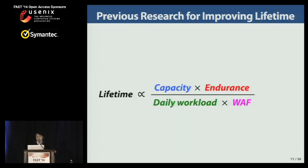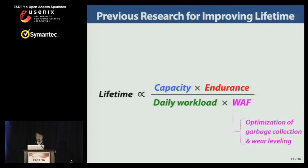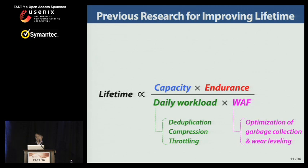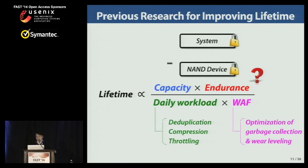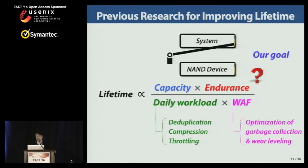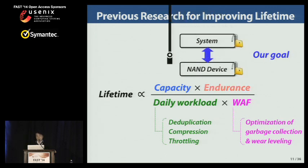Until now, many lifetime-enhancing techniques have been mainly focused on reducing the write amplification factor. For example, garbage collection and wear leveling techniques have been improved to increase the efficiency of FTL algorithms. Moreover, to reduce daily workload, various system-level approaches such as deduplication, compression, and caching techniques have been proposed. On the other hand, few system-level techniques were proposed for improving NAND endurance. Because of the layered software architecture, device and system have been independently developed. Therefore, we propose a cross-layer optimization technique for improving NAND endurance.